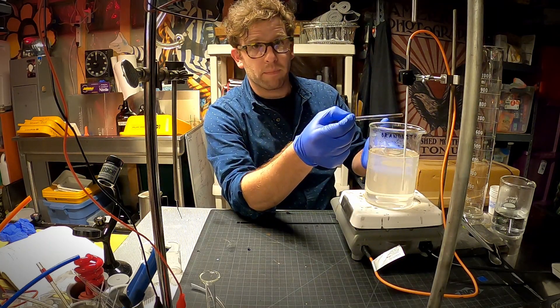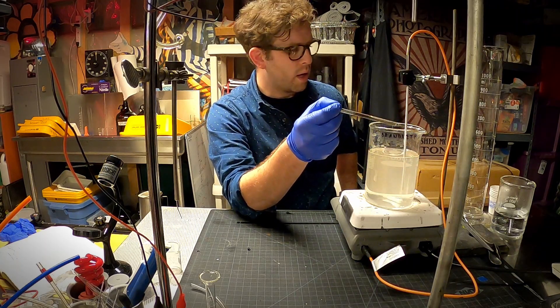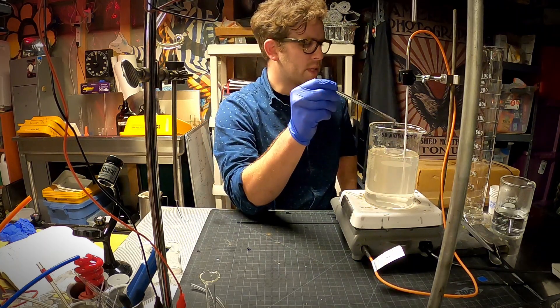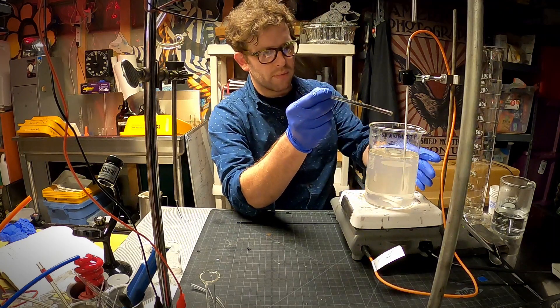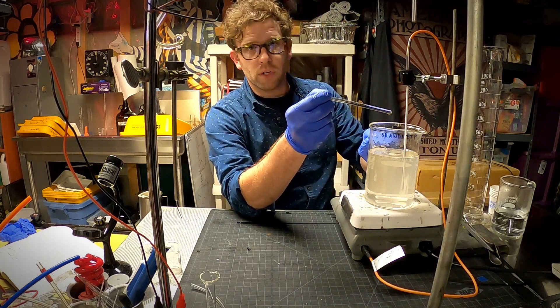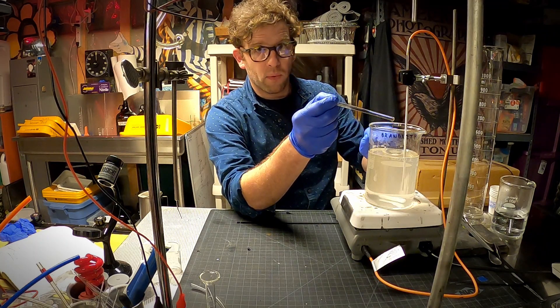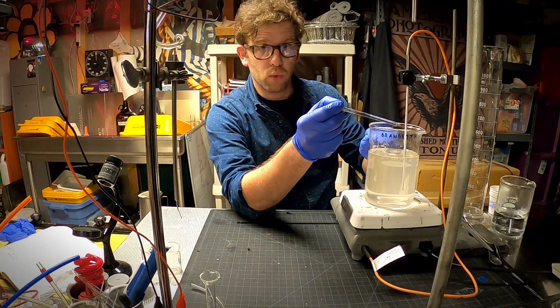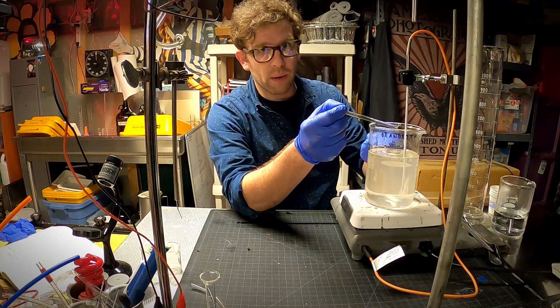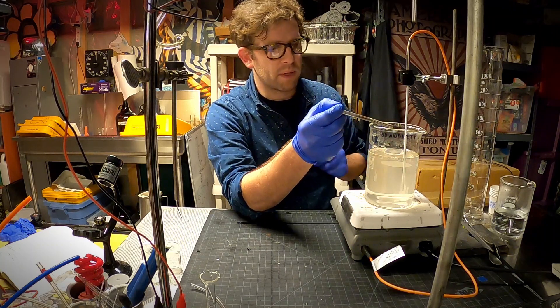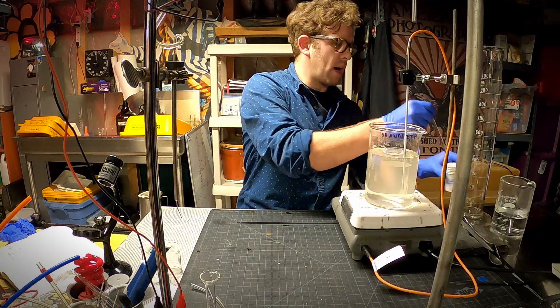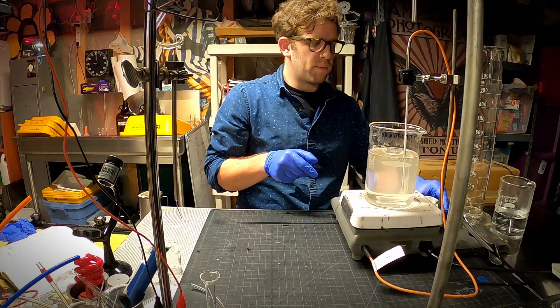Just like that, I have fresh developer that's ready to go. Now, the one thing that I'm missing here is the final step. I had 750 milliliters of distilled water. I had 3 grams of metol, 45 grams sodium sulfite, 12 grams hydroquinone, 80 grams sodium carbonate, and 2 grams potassium bromide. That makes our developer solution.